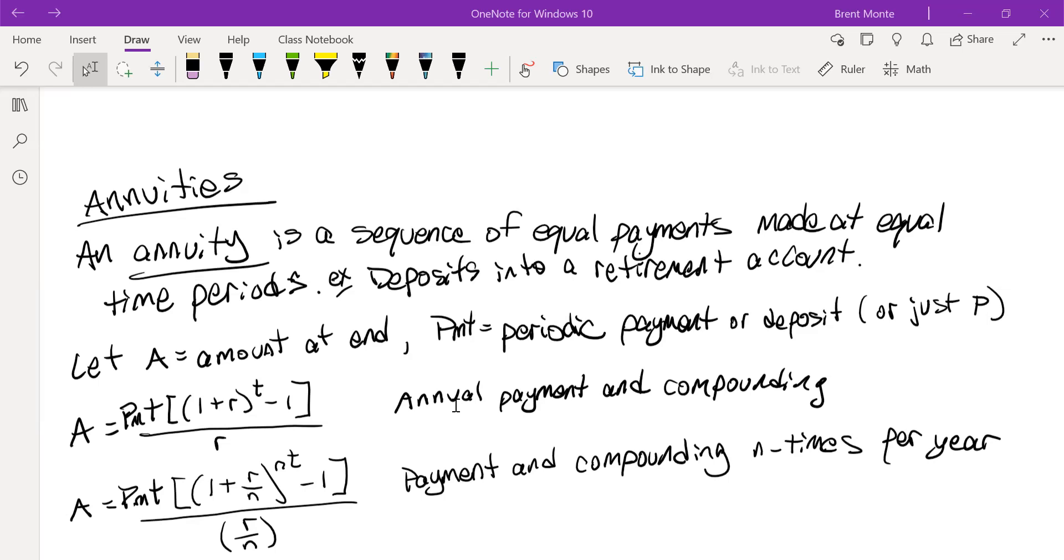You'll notice the frequency of the payment and the frequency of compounding have to match for these formulas you see on the screen to work. So the first one is if we're just doing it once a year, annually. As you can see, it's a complicated formula. I'll do another video that I'll link to the end of this video where I'll show some examples of these two formulas.